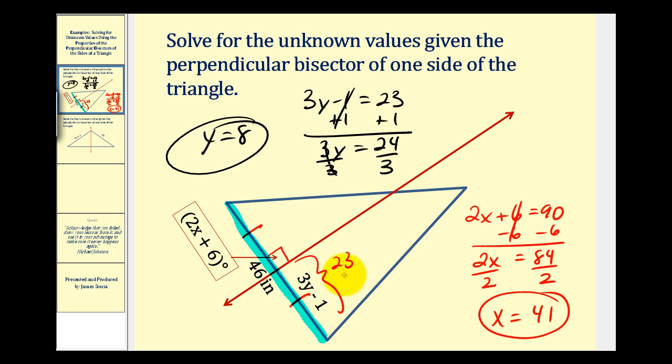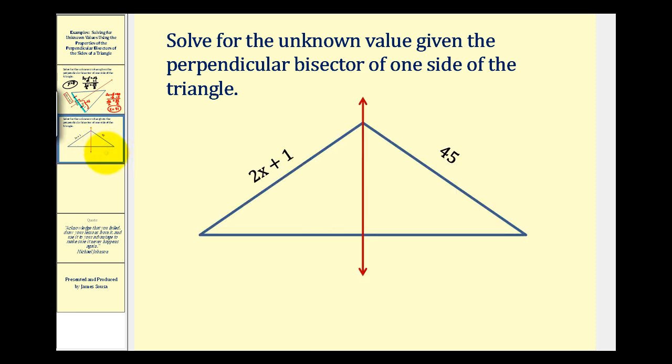Let's take a look at one more example. Again we have a triangle and this red line is a perpendicular bisector of this side of the triangle. Now this problem is kind of a special case because notice how this perpendicular bisector also passes through the vertex that's opposite the side of the line bisects.